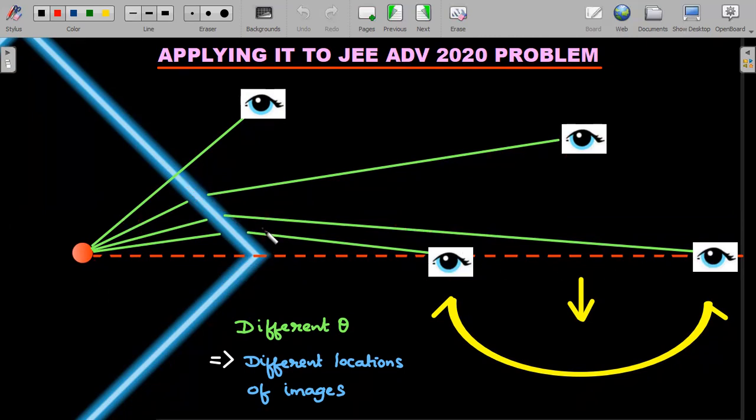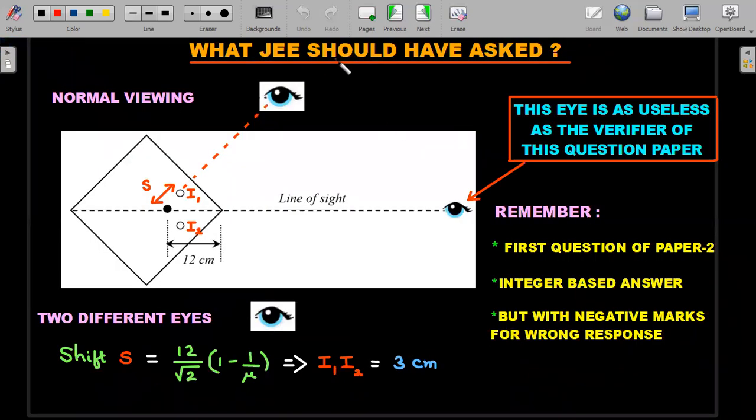Even now you may argue that in the JEE question they never gave these eyes on the top, they gave the eye on this one. If you realize carefully, they never mentioned the distance along this line. Even for the two eyes drawn on that line, you would get two different angles of viewing. Even if you go very close, you'll get a different angle of viewing.